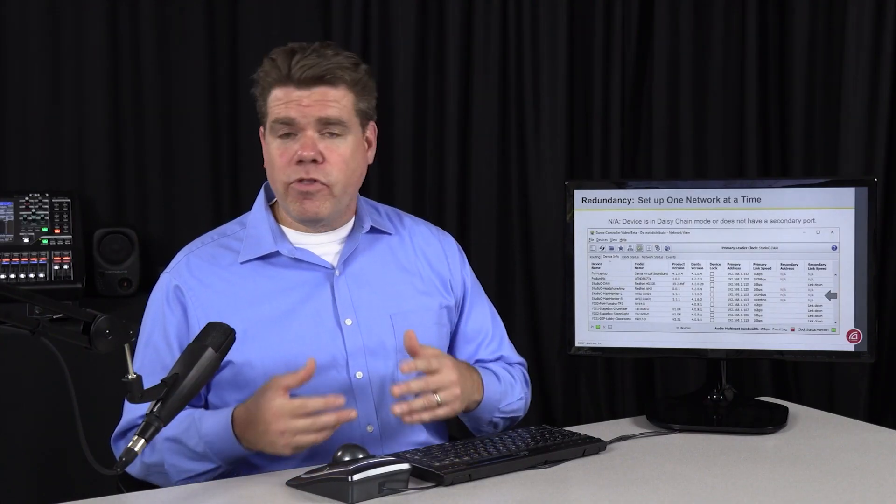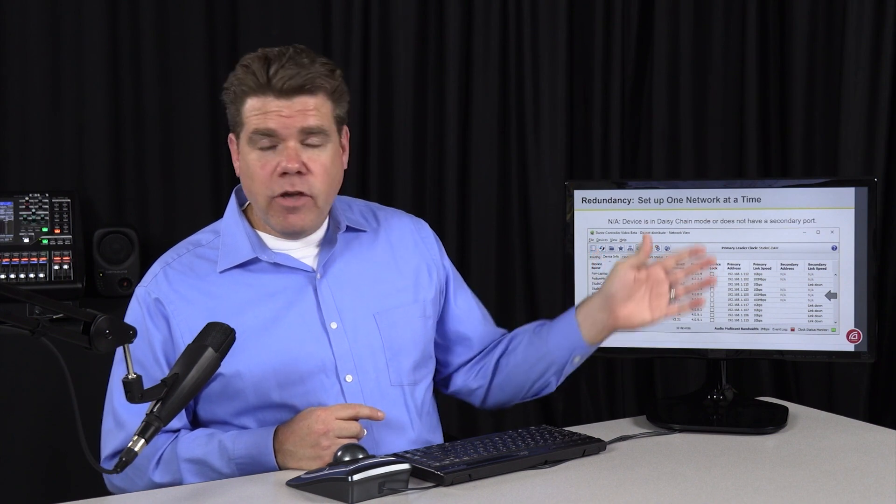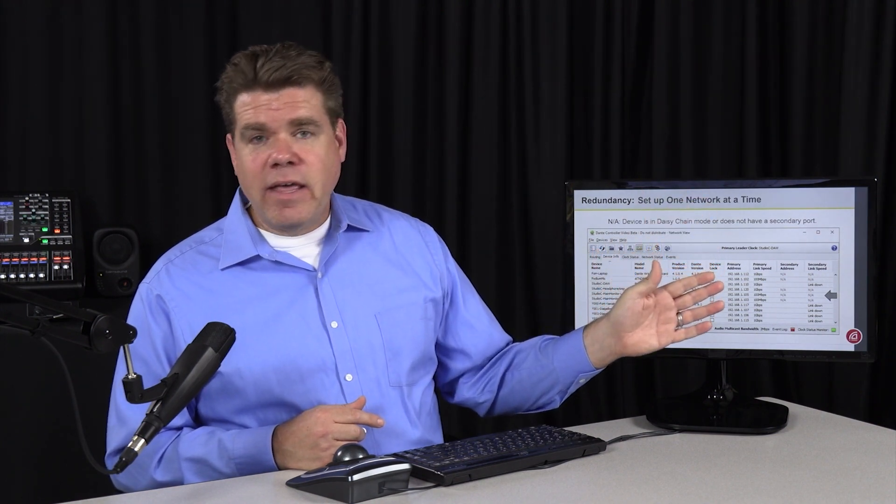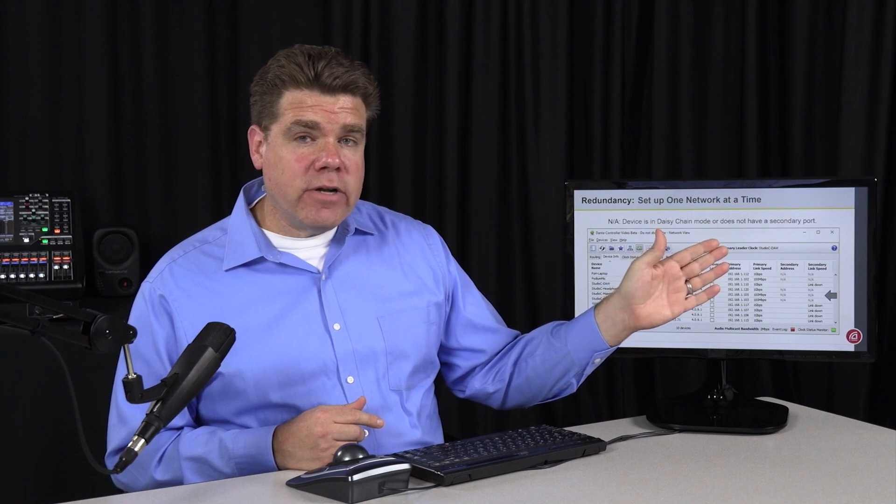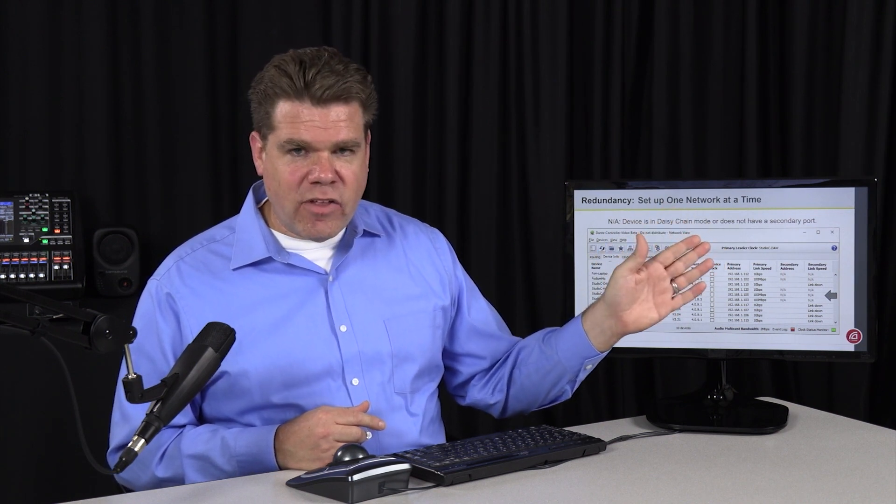So if you're commissioning a system with a redundant configuration and you've turned off your redundant network, you should be able to go down this list and anytime you see NA in that secondary port, you should be able to verify that that is a device that only exists on the primary.